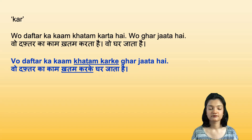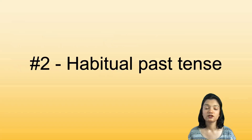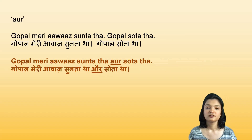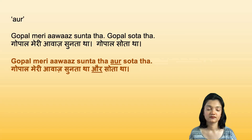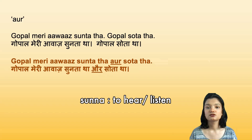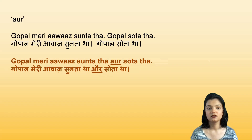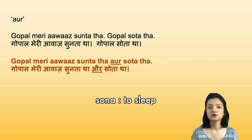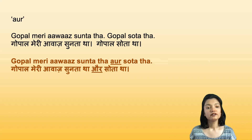Now habitual past tense, which talks about habits in the past — something you used to do. Our sentences are: 'Gopal meri awaz sunta tha' and 'Gopal sota tha.' Sunta tha means used to listen/hear, sota tha means used to sleep. Meri awaz means my voice. Combined using 'aur': 'Gopal meri awaz sunta tha aur sota tha.' As simple as that — Gopal used to listen to my voice and he would sleep.